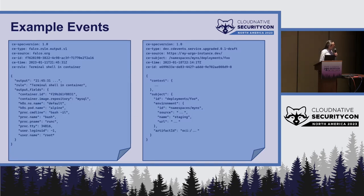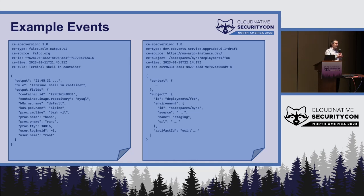These are some examples of actual events. The one on the right is the Falco rule; the one on the left is from CD Events about a deployment. You can imagine how both of these are interesting and useful when you're trying to build a picture of your security posture or to react and mitigate things happening in your enterprise. I've had to cut down on the content of the payload in both cases — they're actually longer than this.